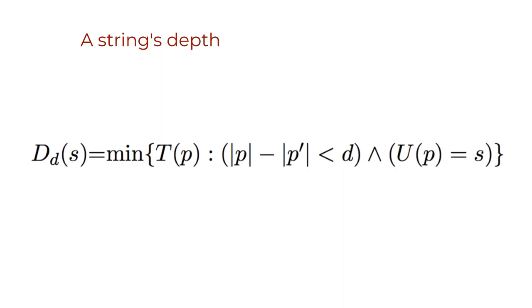uppercase D at significance lowercase d of an object s is the minimum time t taken by a computer program p running on a universal Turing machine u that can reproduce s and whose program length compared to the shortest computer program p prime is not greater than d and u of p reproduces the original object s.